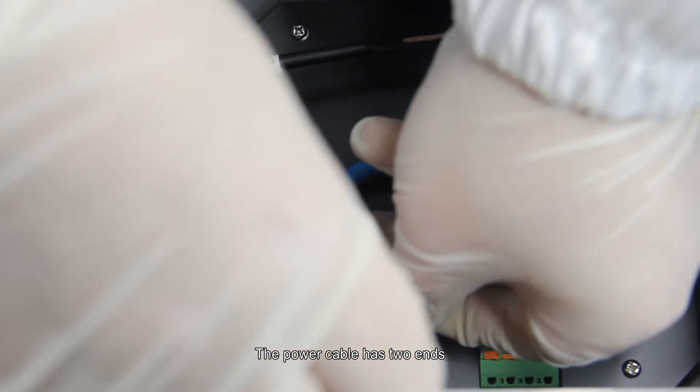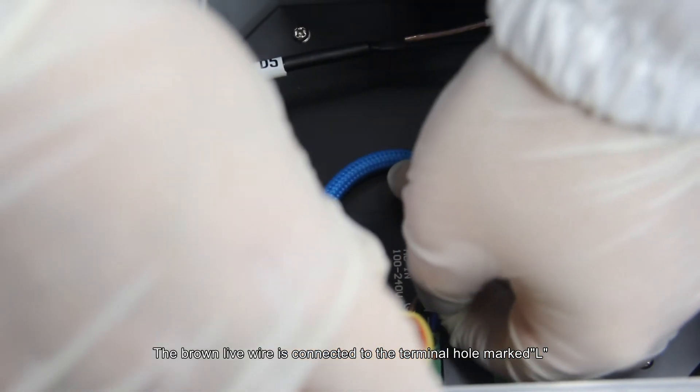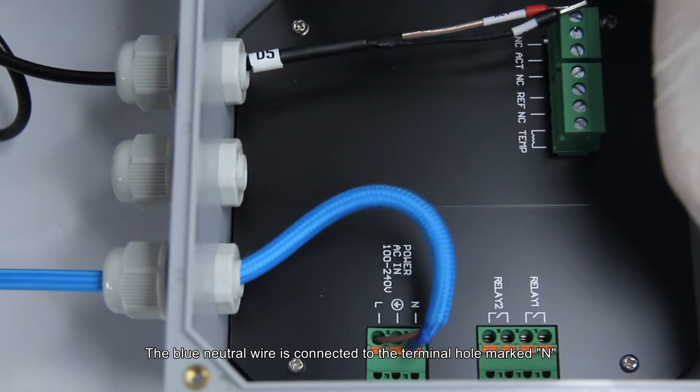The power cable has two ends. The brown live wire is connected to the terminal hole marked L. The blue neutral wire is connected to the terminal hole marked N.